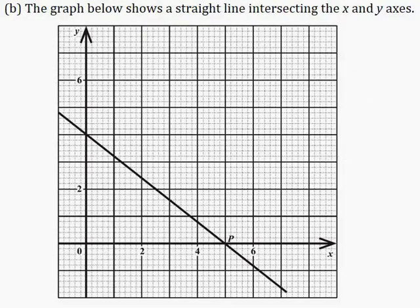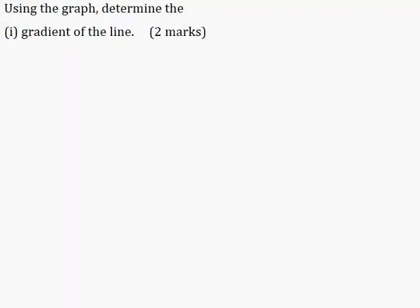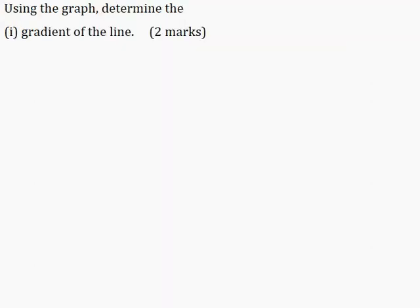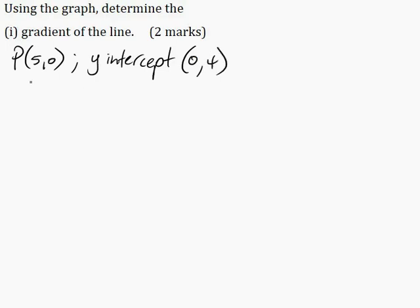Part B: the graph below shows a straight line intersecting the x and y axes. Part 1: using the graph, determine the gradient of the line for two marks. I need to identify the coordinates of two points on the line. I'll use the x and y intercepts. The x intercept occurs at P, which is (5, 0), and the y intercept occurs at (0, 4). I'll let P be (x1, y1) and the y intercept be (x2, y2).